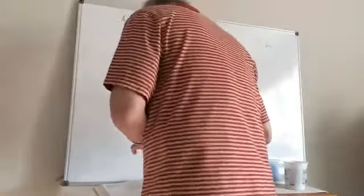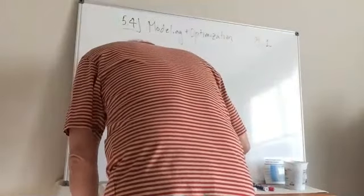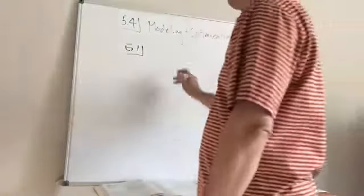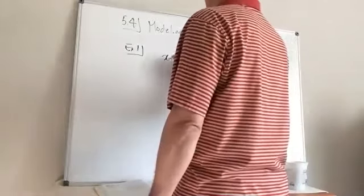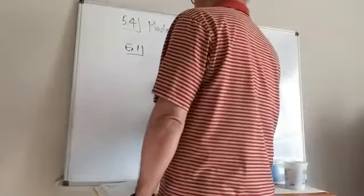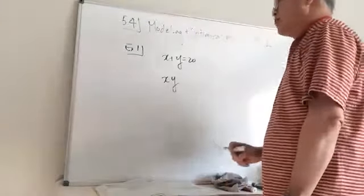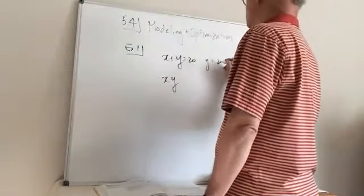We're on page 224, let's start with example number one. Find two numbers whose sum is 20 and whose product is as large as possible. So we have two numbers x and y that add to 20, and we're trying to maximize the product. Well, y is going to be equal to 20 minus x.